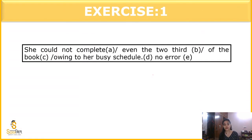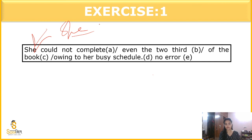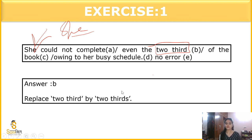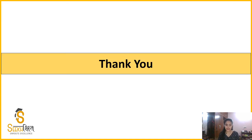The next question: 'She could not complete even the two-third of the book owing to her busy schedule.' Two-third is incorrect — it is always 'two-thirds.' Two-thirds of the book owning to her busy schedule — meaning she could not complete even two-thirds of her book because of her busy schedule. This brings us to the end of our session. I hope you liked it. Please like, share and subscribe to our channel. Thank you.